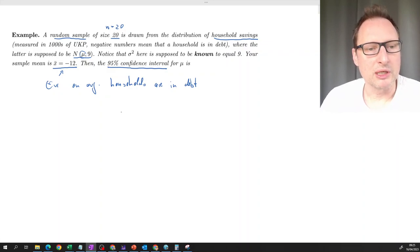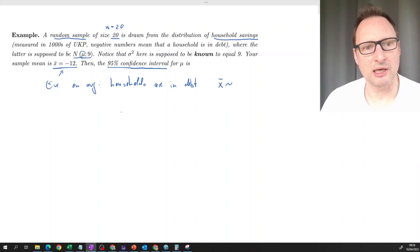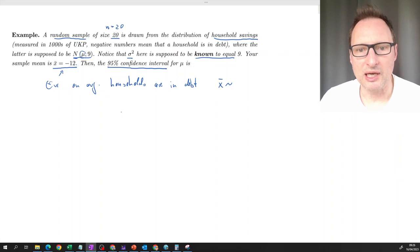We know we need two things. We need to know how X bar is distributed, because that will determine how we can calculate our measure of sampling variability. Given the situation we have where we know the population is normally distributed and we know the variance, we know that X bar is also normally distributed with the same mean as the population, although we don't know it.